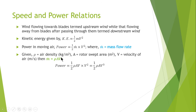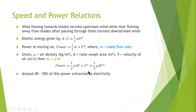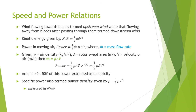The power in moving air is calculated by replacing the mass flow rate with rho·A·v, giving the formula: power = ½ρAv³. Around 40 to 50 percent of this power is extracted as electrical energy. The specific power, also termed power density, is given by P = ½ρv³ and is measured in watts per square meter.